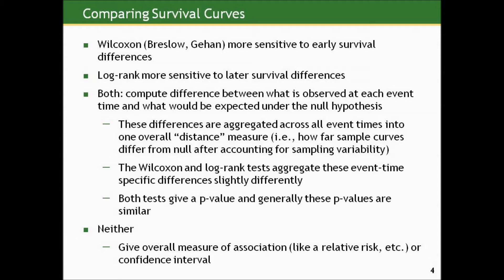One weights earlier event times more heavily and one weights those later in the time period more heavily. Both tests give a p-value, and generally these p-values are relatively similar. The shortcomings of these tests — and why we'll hold off until giving you the bigger tools in Statistical Reasoning 2 — is that neither gives an overall measure of association like a relative risk, risk difference, or difference in means.